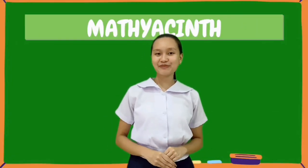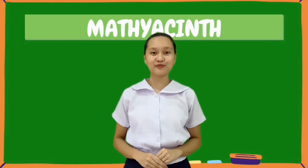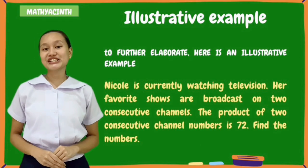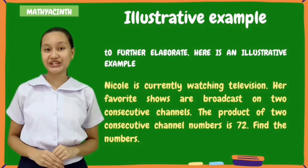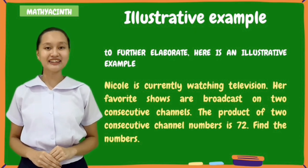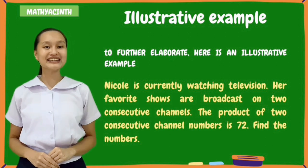Now, let us apply these steps in solving problems involving factors of polynomials. Nicole is currently watching television. Her favorite shows are broadcast on two consecutive channels. The product of the two consecutive channel numbers is 72. Find the numbers.